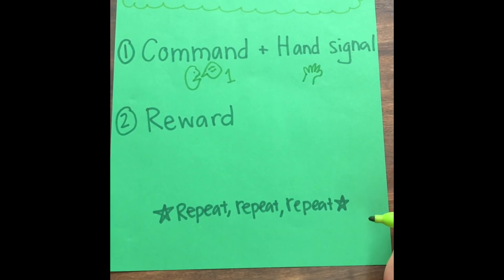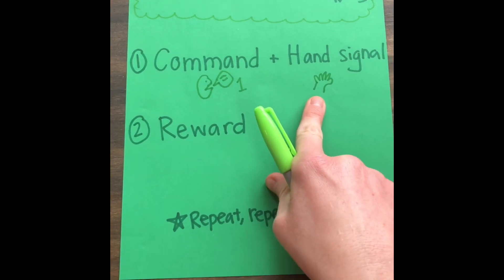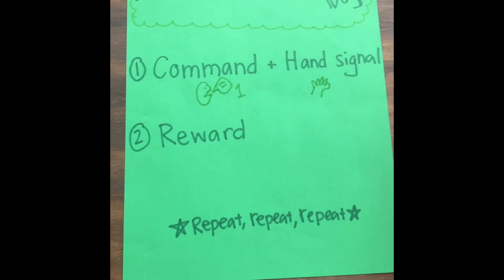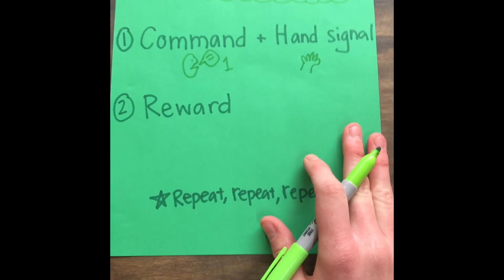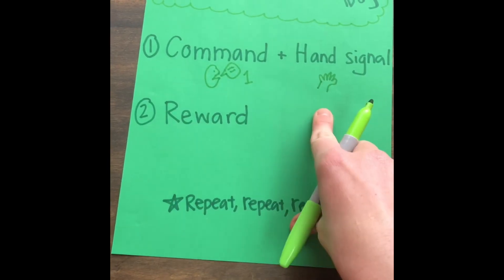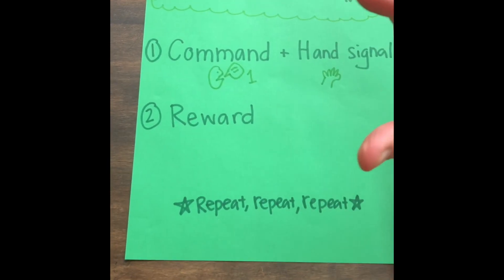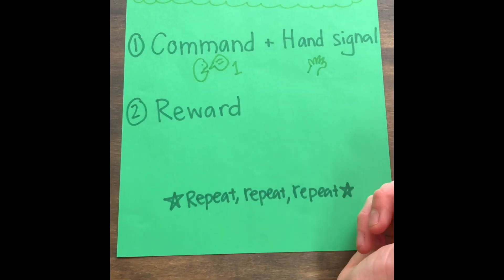So pick a hand signal that goes with the word. After you give them the command and the hand signal at the same time, hopefully they do the action. The first few times you're gonna need to probably push them into the action. So if it's sit, they obviously don't know what the word sit means, so you're gonna say sit, you're gonna give them a hand motion, and then you're gonna push them kind of down into the sitting position, and then as soon as you do that you want to give them a reward.